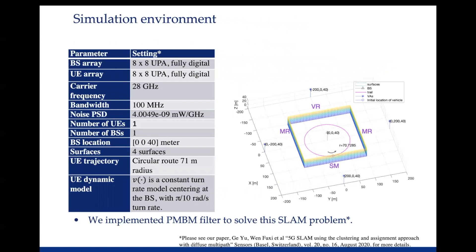This figure shows our simulation environment. There is a base station marked with a triangle, and four different surfaces with virtual anchors located at the four stars. The vehicle drives around the base station with a constant speed. The transmitter and receiver are both implemented with a uniform rectangular array. The SLAM filter is based on the PMBM filter. More details about the filter and parameters can be found in our paper.